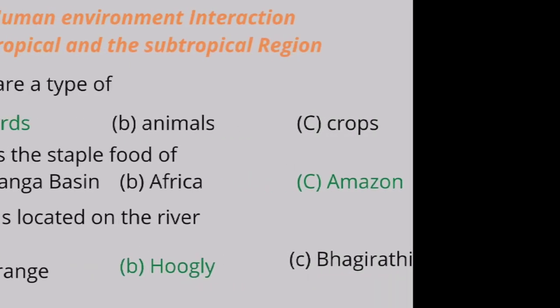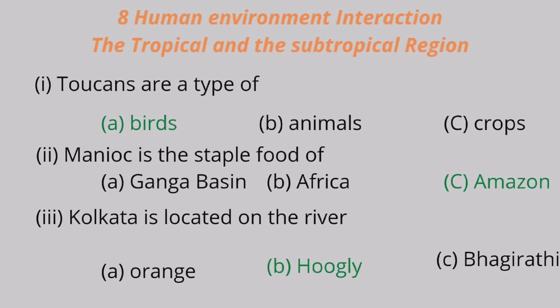Chapter 8: Human Environment Interactions — The Tropical and the Subtropical Region. Question 1: Toucans are a type of A. birds, B. animals, C. crops. Toucans are a type of birds.